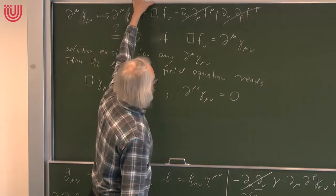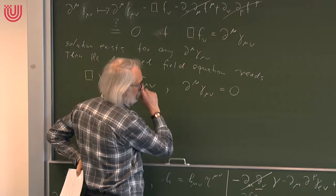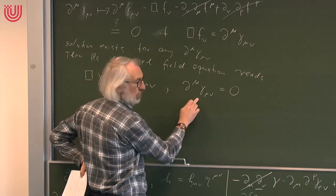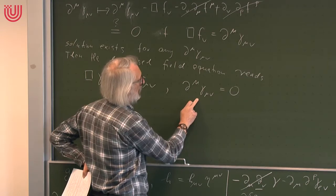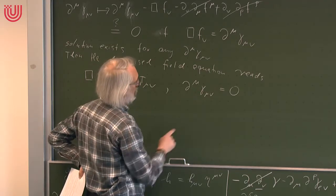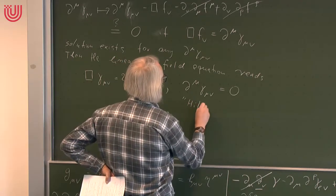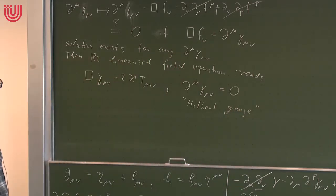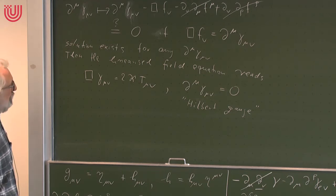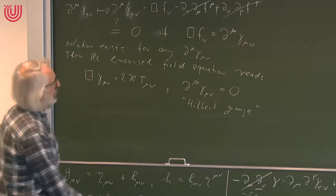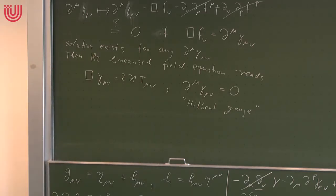This condition ∂^μ γ_μν = 0 is called the Hilbert gauge condition. It has an analogy to gauge conditions in electrodynamics — there, the divergence condition ∂^μ A_μ = 0 is called the Lorentz gauge. This is analogous, and is called the Hilbert gauge. Hilbert was the person who demonstrated it is possible to choose this gauge — Einstein had used it in his 1916 paper but had not proven it was possible. It's also sometimes called the Einstein, de Donder, or Fock gauge.